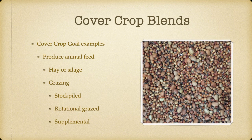When we start including animals into the picture, that may change some of the goals. So if we're producing animal feed, are we looking at haying or silaging it? Or are we going to be grazing it in the field? Are we going to be stockpile grazing it? Rotational grazing it? Or are we looking at using it as supplemental feed during the growing season?